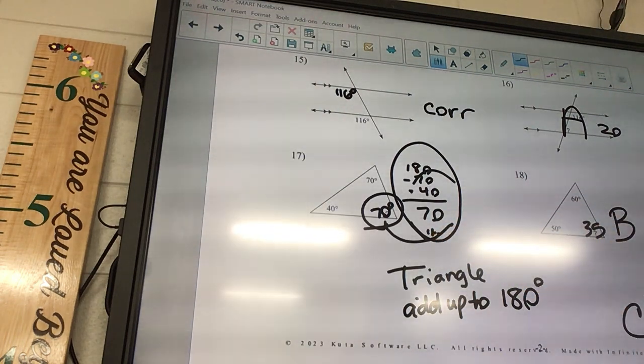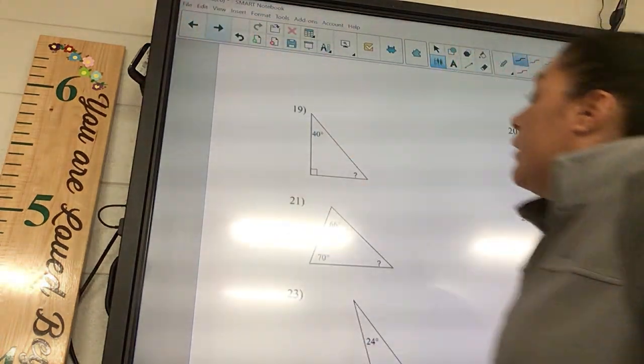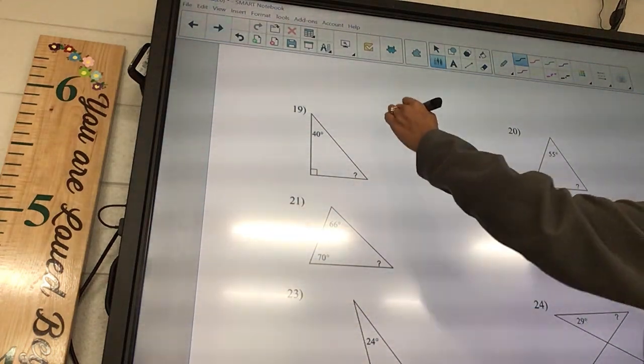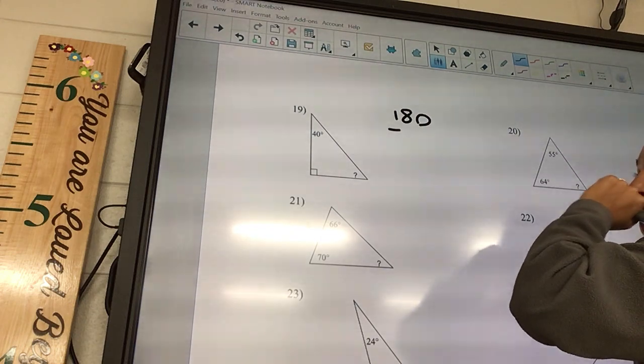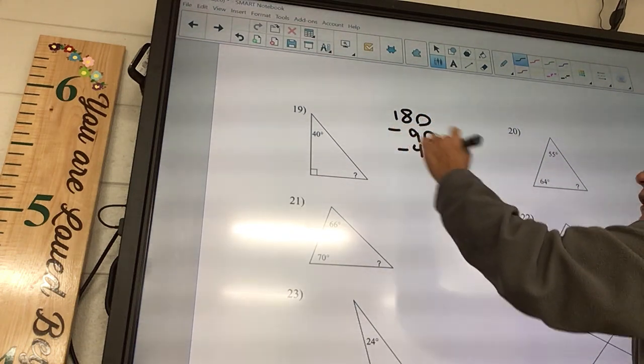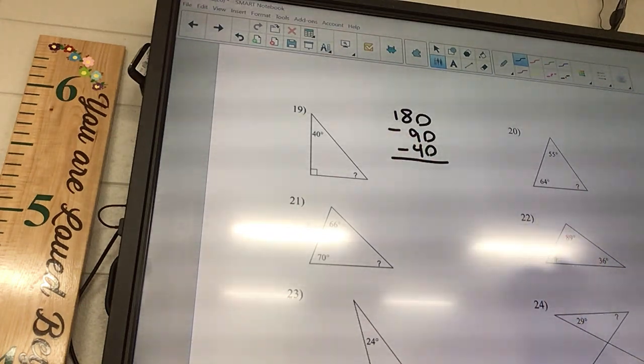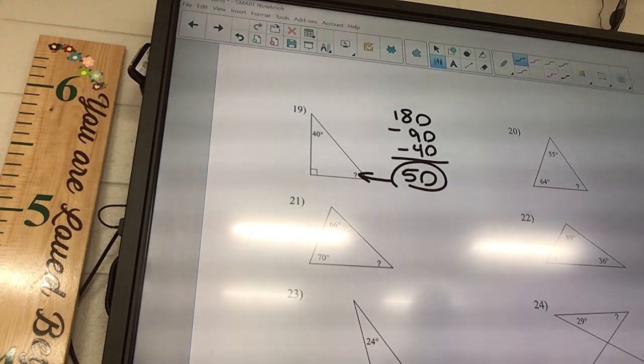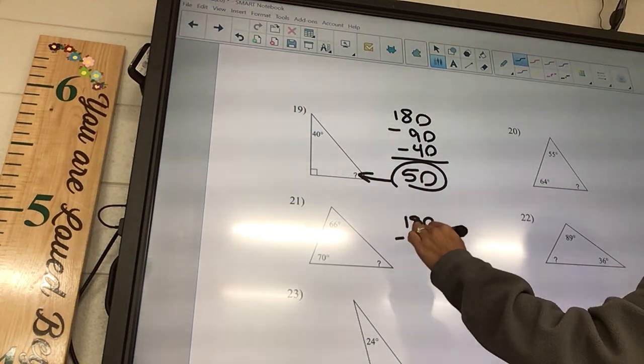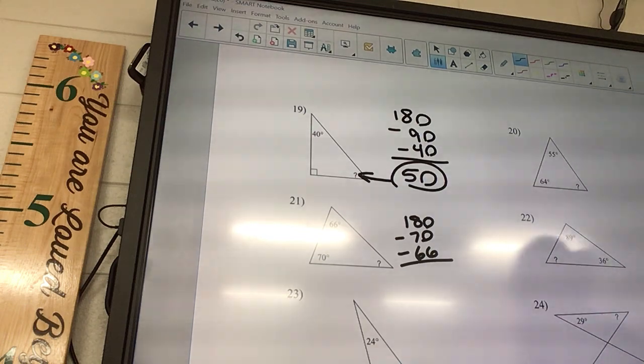Number 19, it's going to be 180 minus what? Minus 90 minus 40. And what is that? 50. So 50, and that really is going to go here.